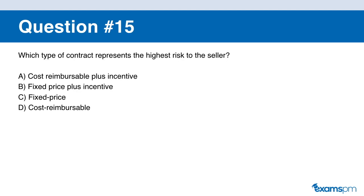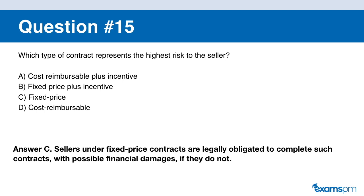Question number fifteen. Which type of contract represents the highest risk to the seller? A: cost reimbursable plus incentive. B: fixed price plus incentive. C: fixed price. D: cost reimbursable. If you said C, you are correct. Sellers under fixed price contracts are legally obligated to complete the contract with possible financial damages if they don't — meaning they must complete the work even if it makes them unprofitable.